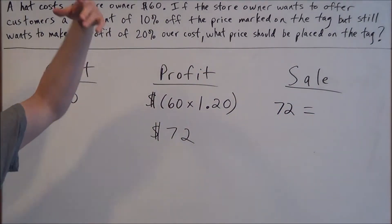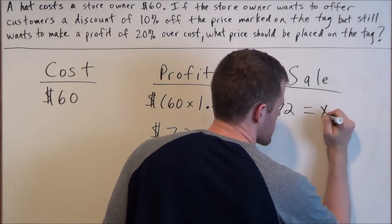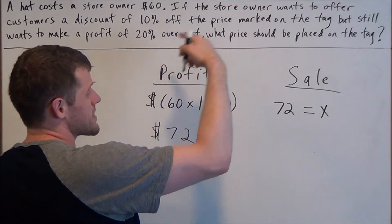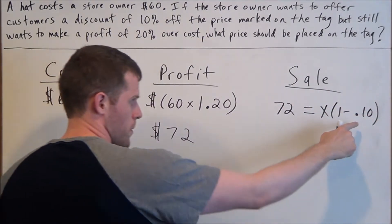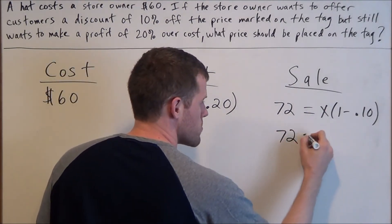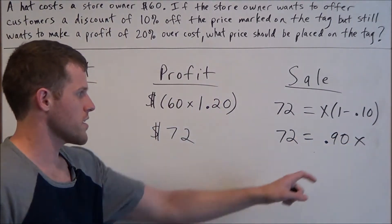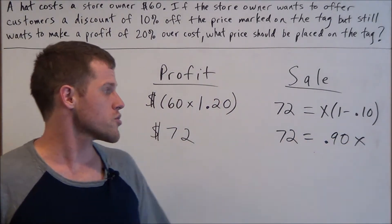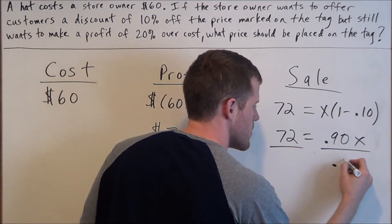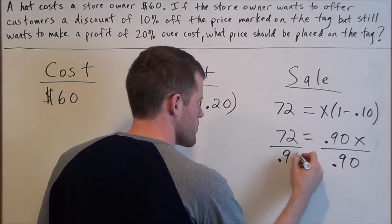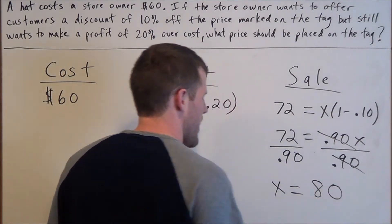He wants customers to get 10% off. So let's say the price he's going to put on the tag is X. He's going to take 10% off, so we do 1 minus 0.10 to represent 10% off. This gives us: 72 equals 0.90 times X. To solve for X, we divide both sides by 0.90, which tells us the price on the tag is $80.